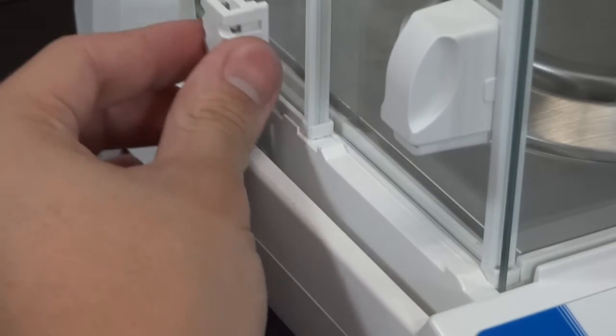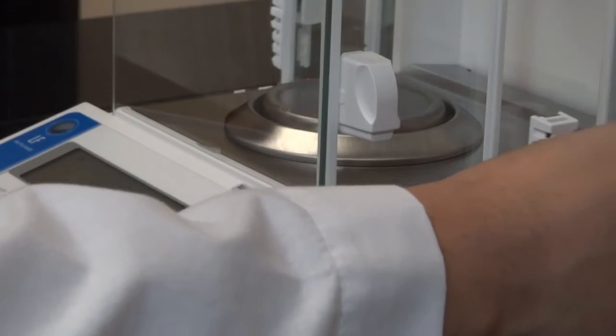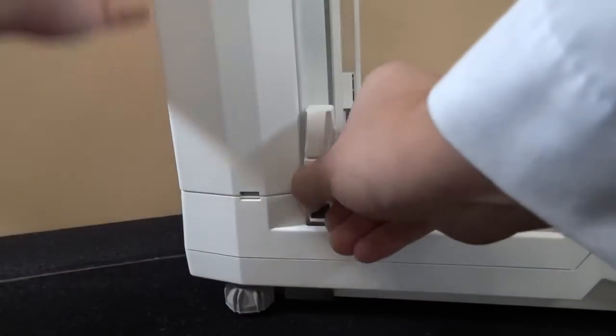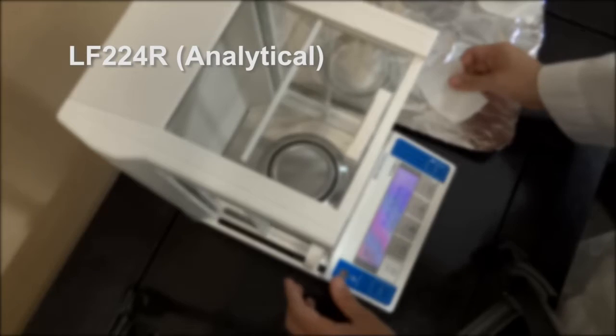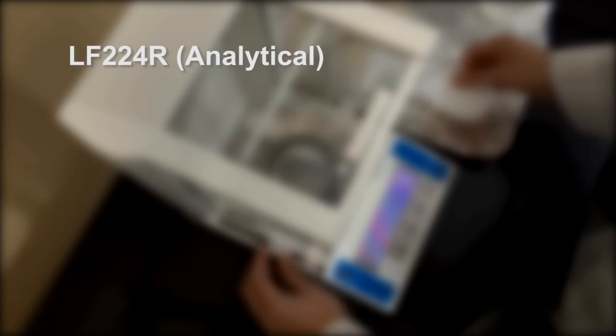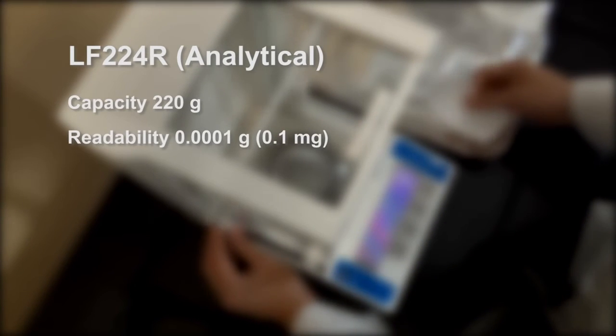All three glass doors are split nesting, meaning that they will not protrude outside the shell of the casing, thus saving space and guarding against accidents. The LF-224R offers analytical weighing at a tenth of a milligram.